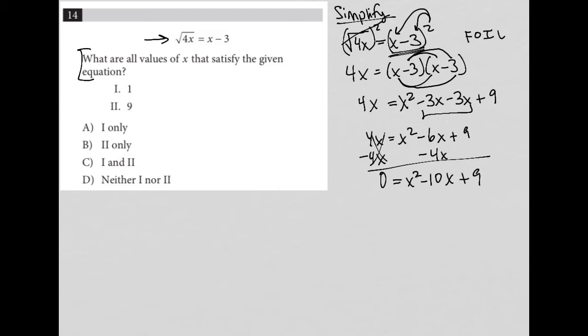I can factor this trinomial into the product of two binomials—x and x. Two numbers that multiply to give positive 9 but add up to negative 10 would be negative 1 and negative 9. So there are my two binomials, which I can now set individually equal to 0.